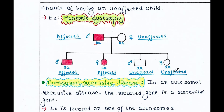This person has a 50% chance of having an affected child. Among four children, two children are affected and two are unaffected — 50/50 probabilities of having an affected or unaffected child. An example of this type of disease is myotonic dystrophy.